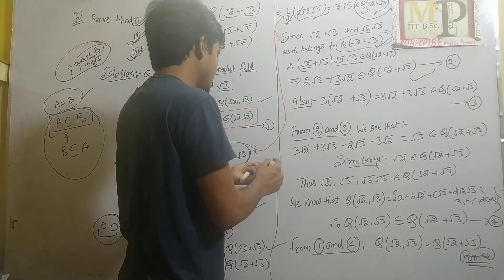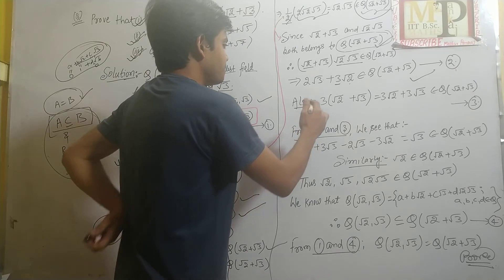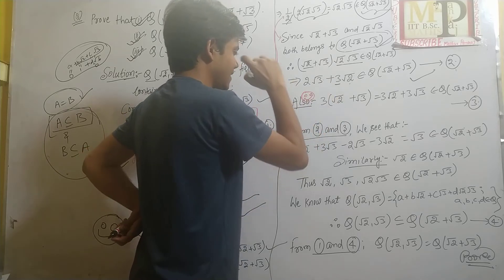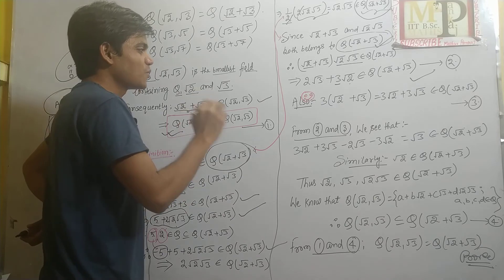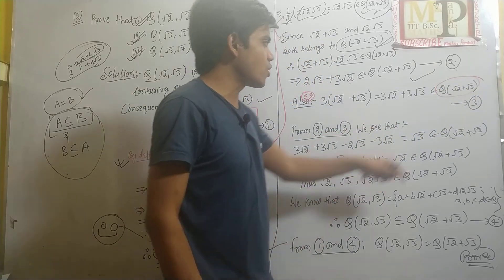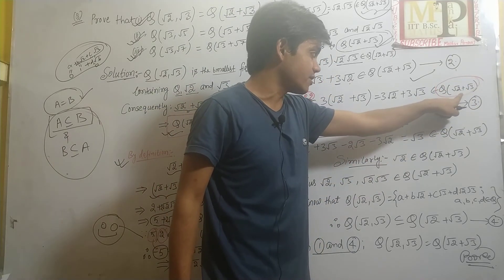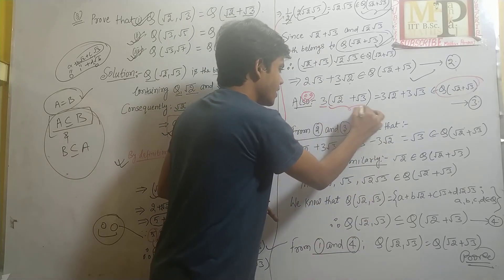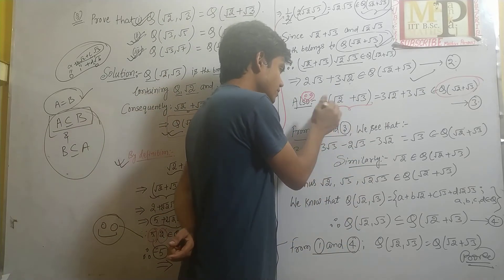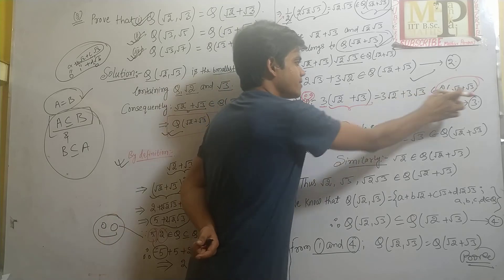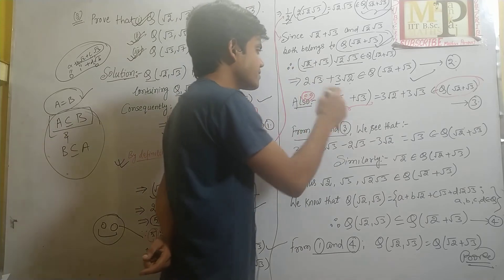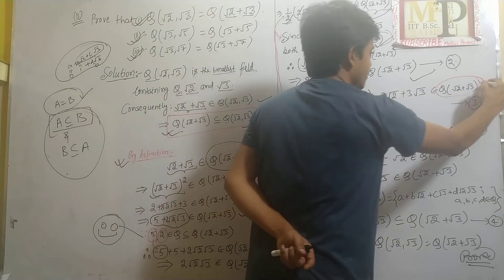अब ध्यान दें — √2 + √3 पहले से इस field में है और 3 rational है, इसलिए 3 × (√2 + √3) = 3√2 + 3√3 भी इस field के अंदर होगा, by closure with respect to multiplication। यह equation 3 का हिस्सा है।